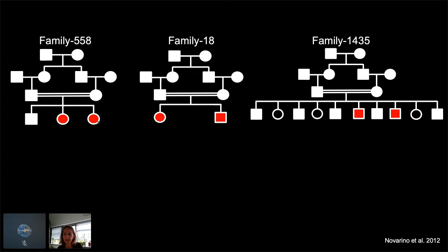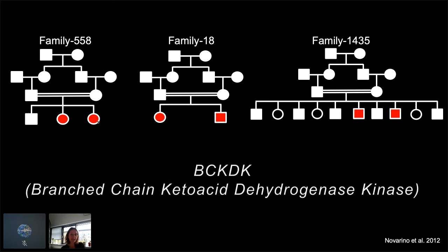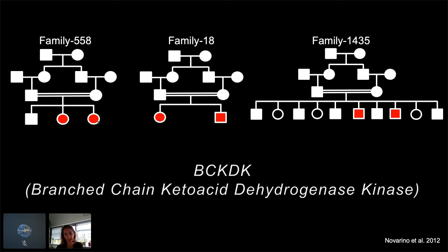We performed whole exome sequencing of all affected patients and some unaffected siblings, and found that all affected patients shared different types of nonsense and missense mutations in the BCKDK gene. BCKDK stands for branched-chain ketoacid dehydrogenase kinase. The branched-chain amino acids — leucine, isoleucine, and valine — are three essential amino acids that no cell in our body can synthesize; the only way to obtain them is through our diet.